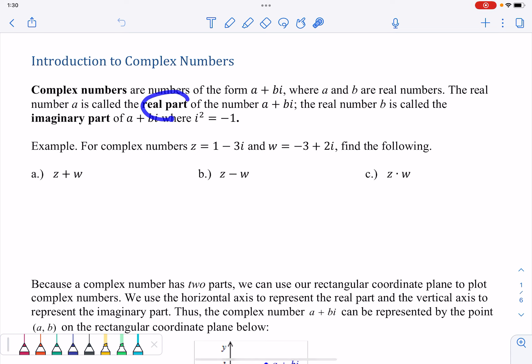The real number A is called the real part of the number A plus Bi, because we can see it's just by itself to the left of the plus sign. The real number B is called the imaginary part of A plus Bi, because it gets multiplied next to I, and we see that I squared is just equal to negative 1.